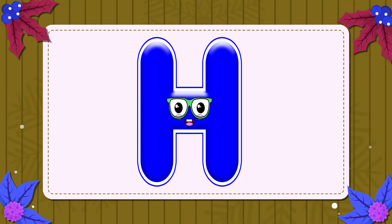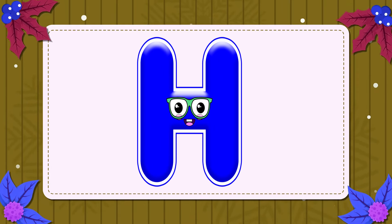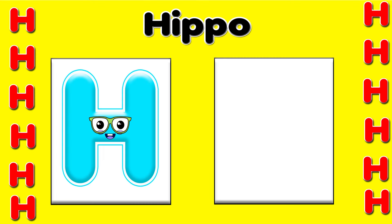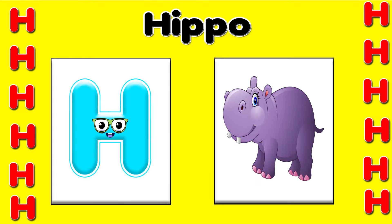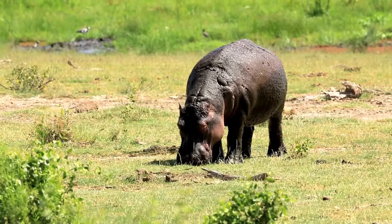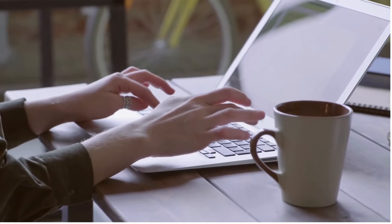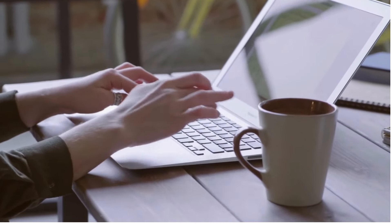H. This is the letter H. H is for hippo — h, h, hippo. H is for hand — h, h, h.